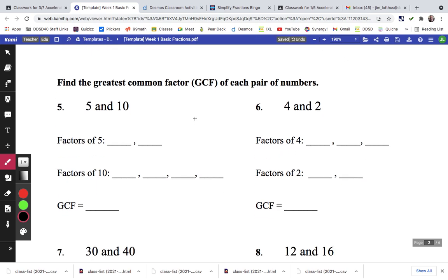So the list of factors of 5 are 1 and 5. The list of factors of 10 are 1, 2, 5, and 10. The greatest number that's in both lists is 5. The factors of 4 are 1, 2, and 4. The factors of 2 are just 1 and 2. The greatest number in both lists is 2.